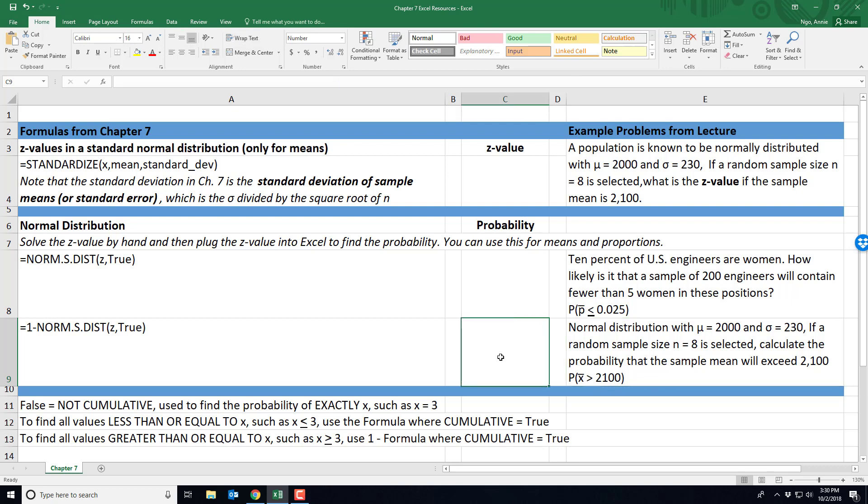But to actually use Excel in this one, because it is greater than some value, we'll type in equals 1 minus NORM.S.DIST, parentheses, the z value that we solve for using the formula when we plugged in our sample mean.